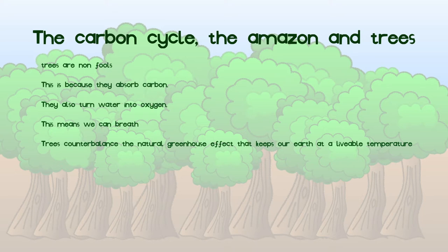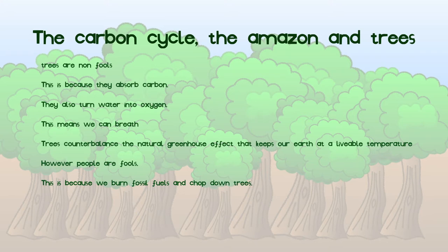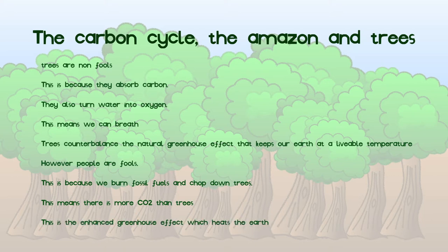Trees also counterbalance the natural greenhouse effect that is required to keep our planet at a temperature suitable for maintaining life. This means trees can regulate our temperature, as the more carbon they absorb the more energy will be able to escape our atmosphere. I have however again concluded that people are fools. This is because people burn fossil fuels and also chop down trees — two negative effects. This means there is more CO2 than trees can regulate, as fossil fuels produce a lot of CO2 and less trees means less absorbing potential. This means we enhance the natural greenhouse effect, which is the enhanced greenhouse effect. This heats up the earth.